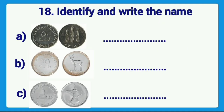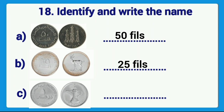Identify and write the name. Some coins are given; we want to identify and write their names in the given place. The first coin is the 50 fils coin. The second one is 25 fils. And the third one is the 1 Dirham coin.